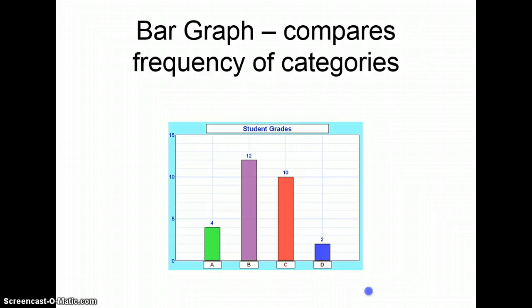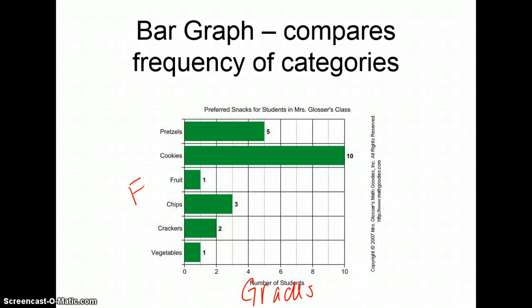A bar graph compares frequency of data. One thing about a bar graph that sets it off from some of the other graphs is that our data does not have to be numerical. So notice down here, when we're talking about students' grades, the frequency is still represented on the y-axis or the vertical axis. But the grades that the students get aren't numbers. We can compare categories. Bar graphs can also be written horizontally, and it is not incorrect or misleading to do so in this way.